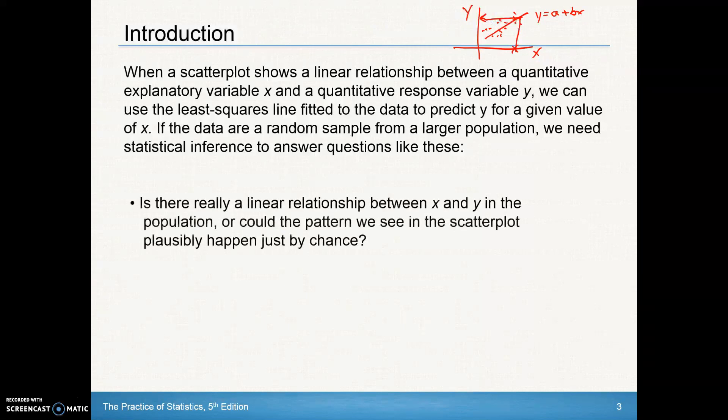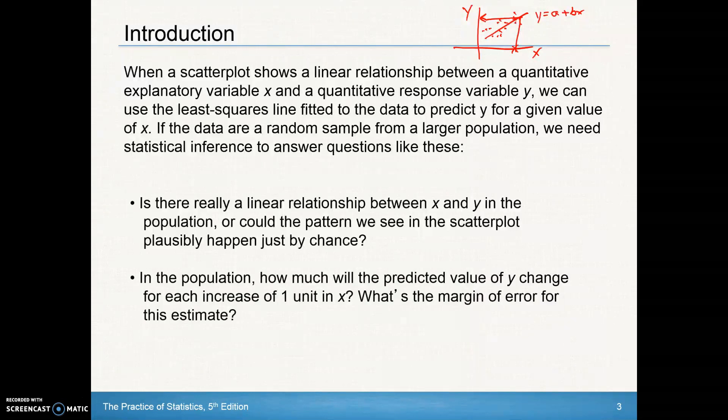Is there really a linear relationship between x and y in the population? This is my sample. Is that truly a linear relationship, or did I happen to just get that by chance? In the population, how much will the predicted value of y change for each increase in one unit of x? So basically what we're doing here is we're looking at slope, your rise over your run, or your change in the y over the change in the x. And then we'll look at the margin of error for that estimate. Part of that calculation will involve the standard error of the slope.